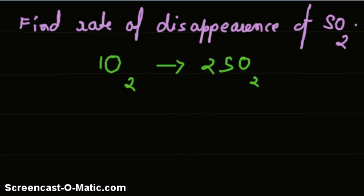Therefore, if we have consumption of one oxygen, it corresponds to consumption of 2SO2.